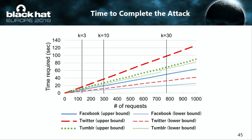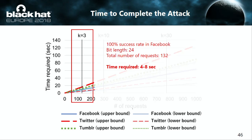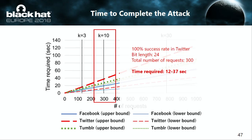I will show the time required to complete the attack. This figure shows the relationship between the total number of requests and the required time. The total number of requests can be derived by a simple calculation. For instance, when the number of iterations is 3 — which achieves perfect estimation on Facebook — the total number of requests is 132. In this case, the required time is 4 to 8 seconds. The required time depends on the measured RTT for each environment.